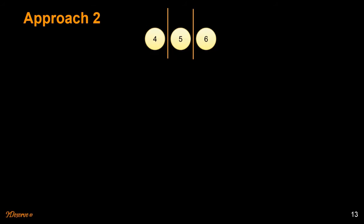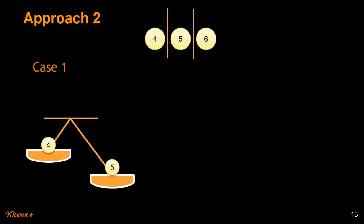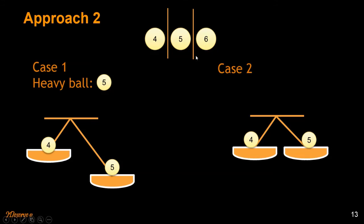So we divide it up into three parts: four, five, six. And then we have two cases here. Case one is where five is heavier than four. We know that five is the heaviest ball, so we have found the heaviest ball. Case two is where four and five are equal. Six is the heaviest ball.